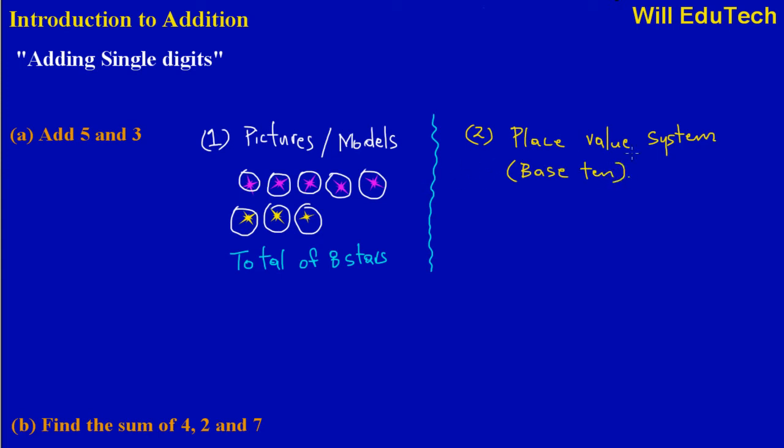In our place value system, since these numbers are single digits, they would fall in the units column. So I would have a 5, and then I would have a 3 exactly below that. Since I'm adding, I would draw my line and put my plus sign. The plus sign looks like a cross.